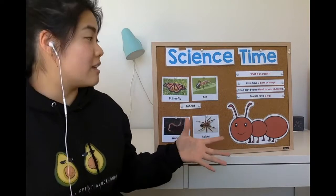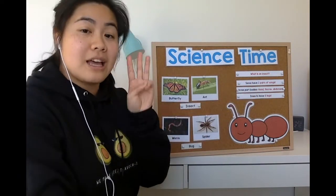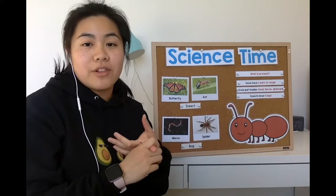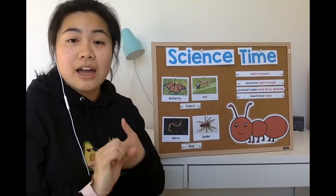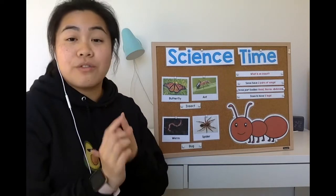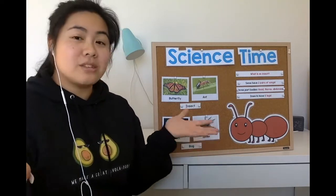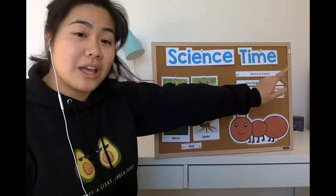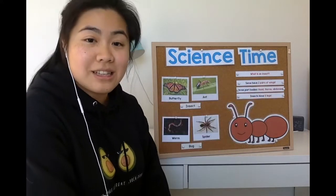Now all insects have three parts to their bodies and also six legs, and some of them have wings like butterflies or dragonflies and also flies or bumblebees. Those are all insects as well because they also have three parts of their bodies, two wings, and six legs.